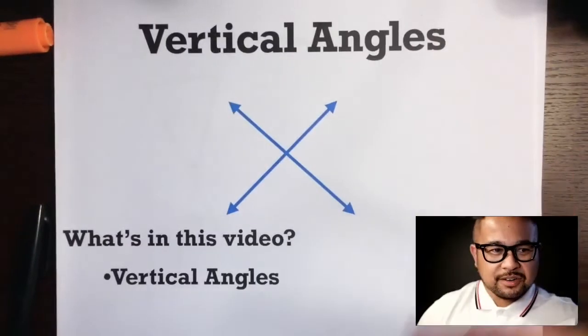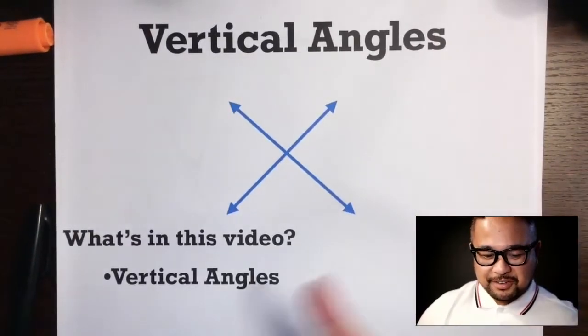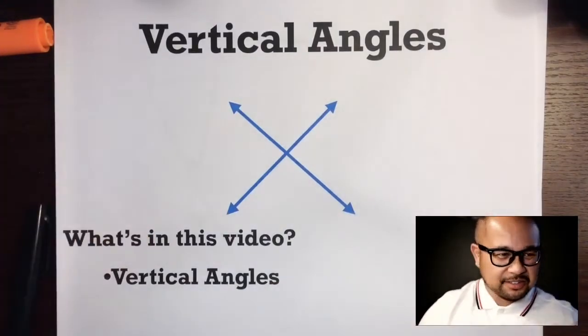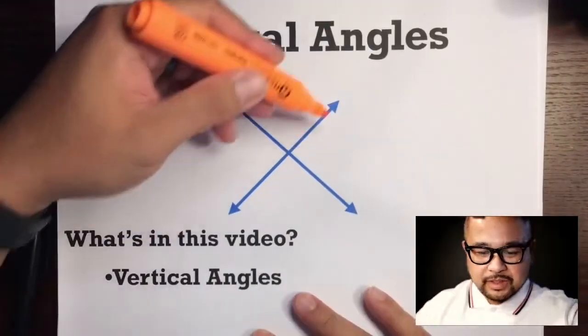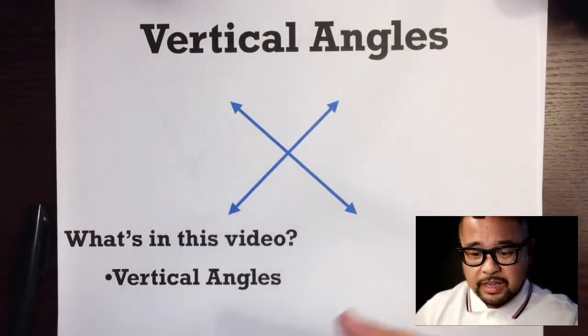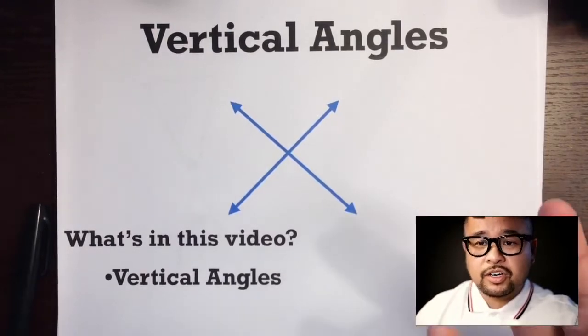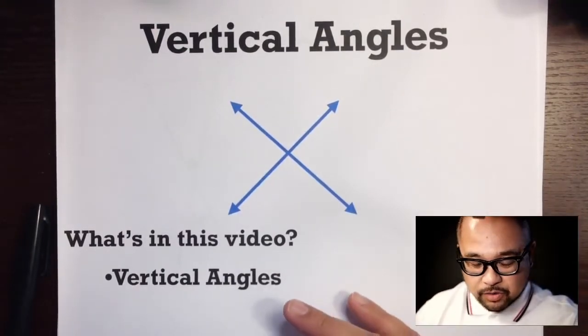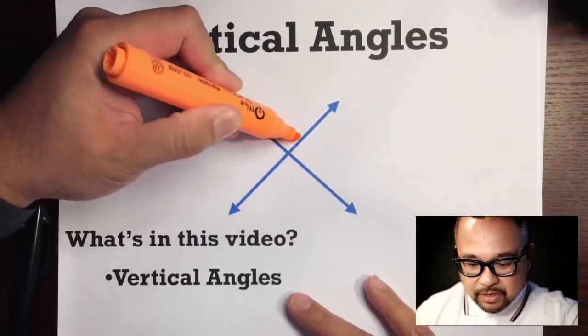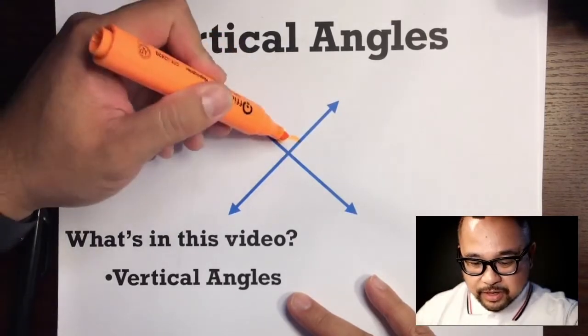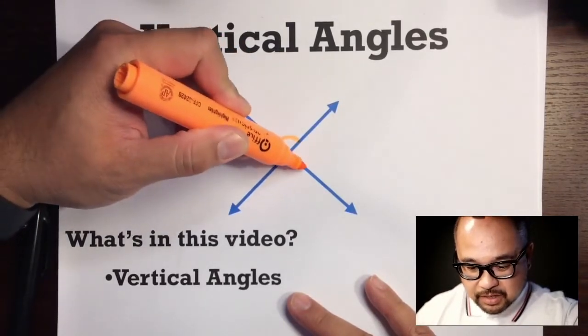Let's do some example problems so you're able to get these correct on your next quiz. Quick review: you need an X to get vertical angles, and their measurements are congruent — their measurements are equal. Vertical angles are on opposite ends, so if I put an arc here, the vertical angle on the opposite end is congruent to that angle.